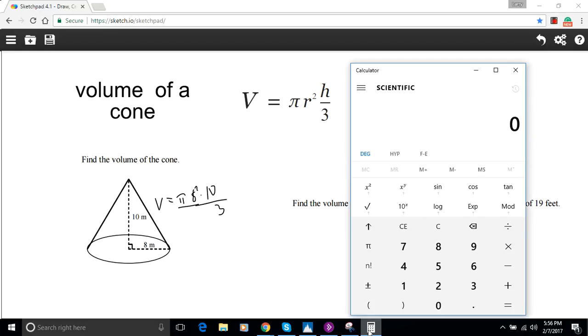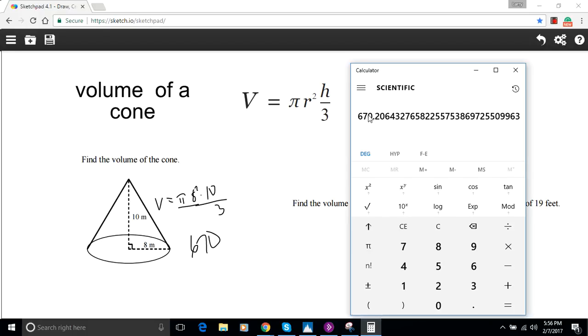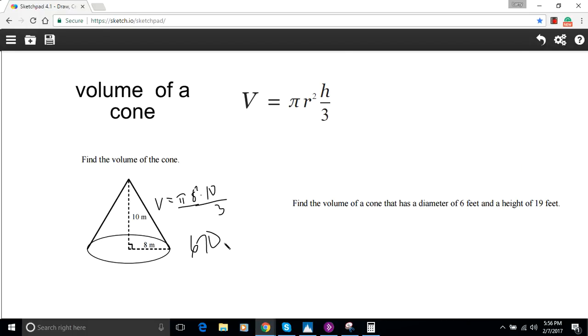Let's use our calculator and figure this out. We've got pi times 8 squared, which is 64, times 10, that's our height, and then divided by 3. We get 670.21 to the nearest hundredth. This was meters, and since this is volume, this is cubic meters.